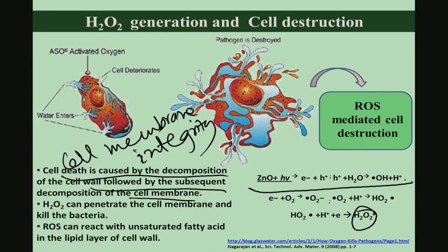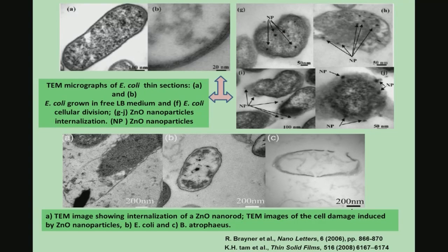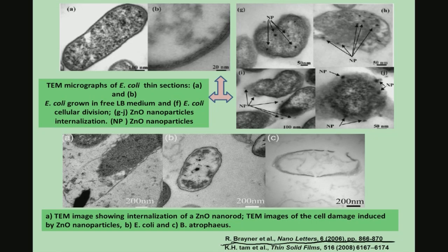H2O2-treated cells are often used as a control, which will definitely show some cell death. This statement can be substantiated by published literature from other groups. For example, Brayner and team published a paper in Nano Letters in 2006, reporting how E. coli bacteria morphology can be disrupted quite significantly by the addition of zinc oxide nanoparticles.